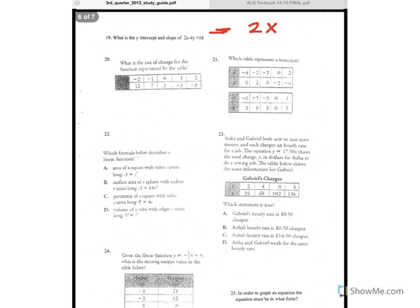So you have to take 2x minus 4y equals 16, and you have to put it in slope-intercept form. Right now it's in standard form.